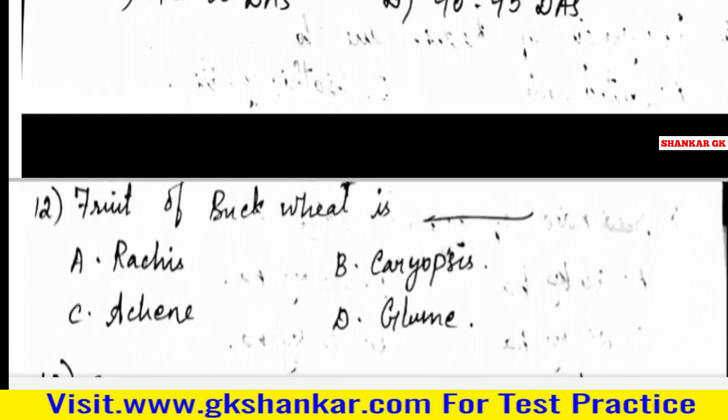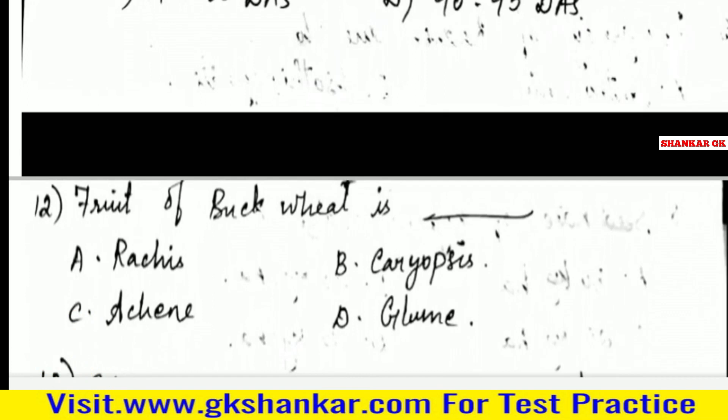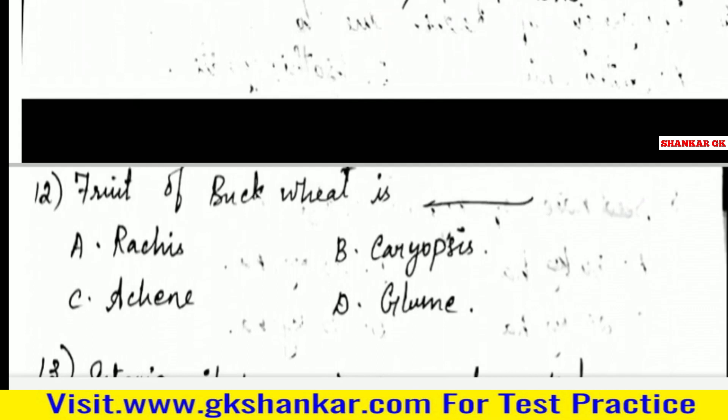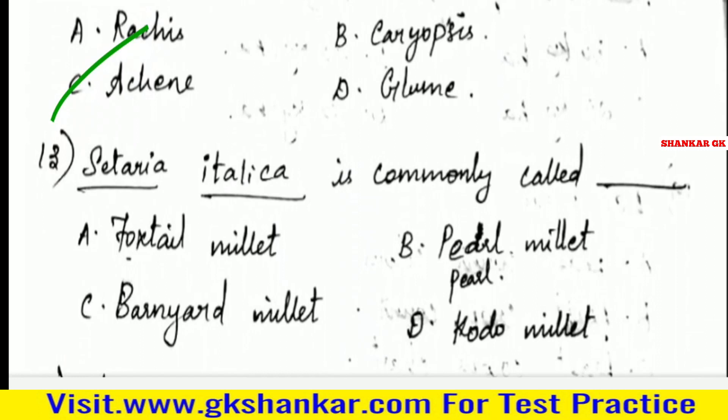Twelfth question: Fruit of buckwheat is — A. Rajas, B. Karyopsis, C. Akin, D. Gloom. Answer: C. Akin.